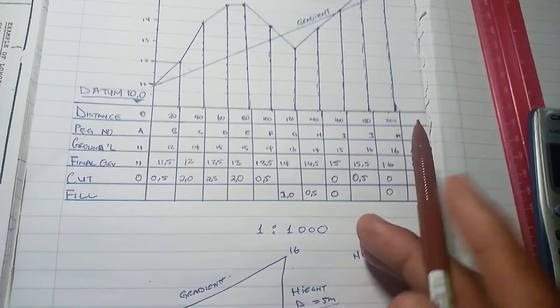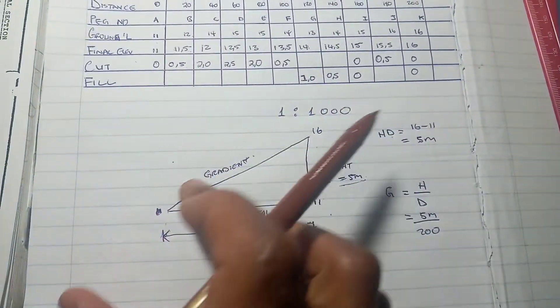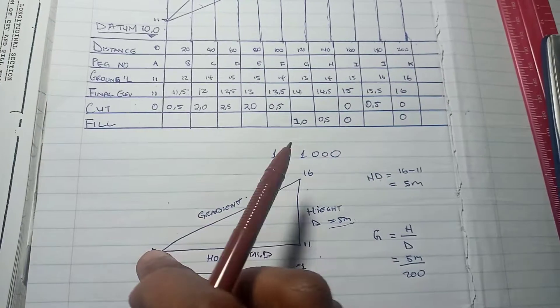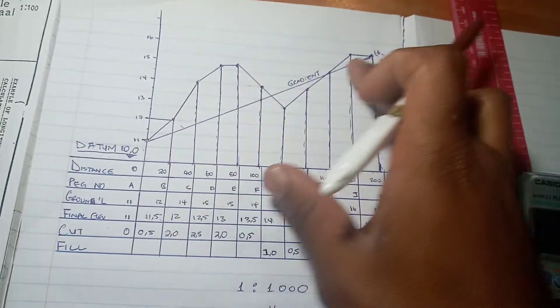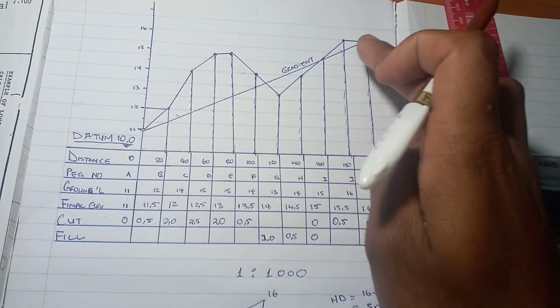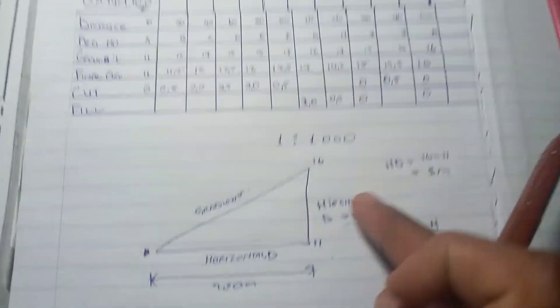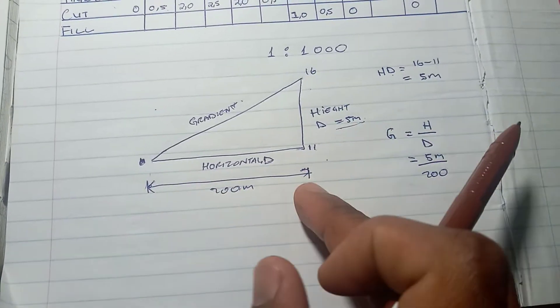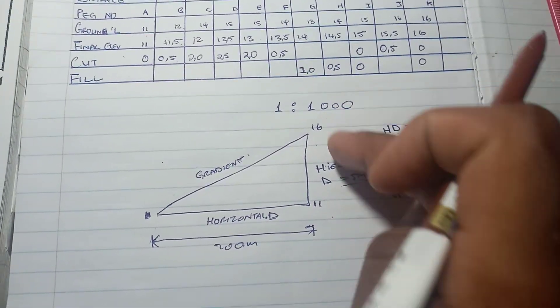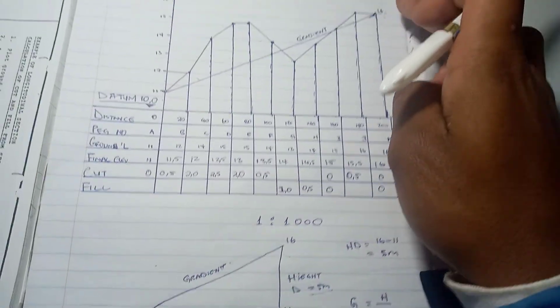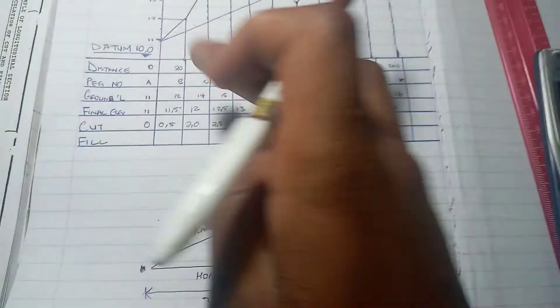The gradient is calculated by height divided by horizontal distance. So gradient equals height over horizontal distance. Now the height is 5 and the distance is 200.